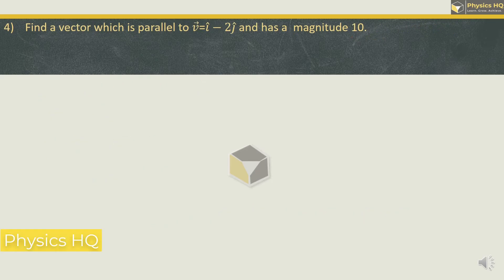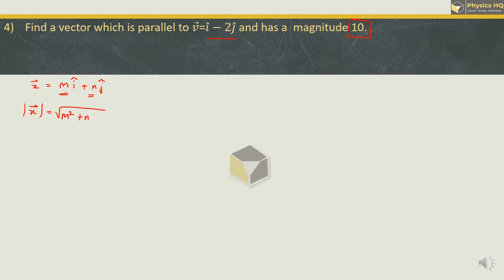Find a vector which is parallel to vector v = i - 2j and has a magnitude of 10. Let us assume the vector is x given by mi + nj, with coefficients m along x-axis and n along y-axis. The magnitude of x is √(m² + n²) = 10. Squaring both sides, we get m² + n² = 100.